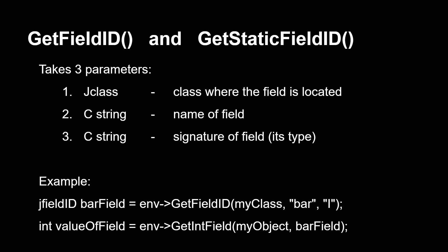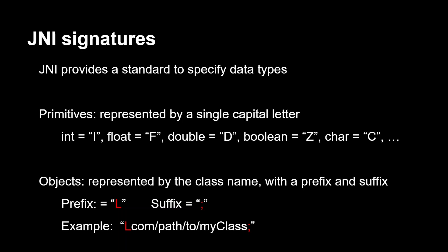GetFieldID takes a jclass and two jstrings, very similar to jmethodID — the second parameter is the name and the last one is the signature specifying the type. For JNI signatures, parameters are always represented by a single capital letter: int is I, float is F, double is D, boolean is Z, char is C, and similar letters for long, short, etc. Objects are represented by the class name with a prefix 'L' and suffix ';'. For example: 'Lcolumn/path/to/MyClass;'.